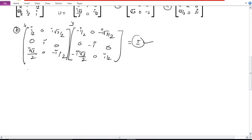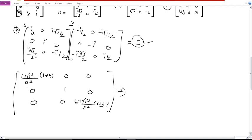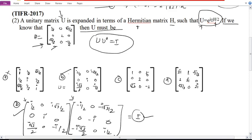The unitary matrix is i by 2, 0, i root 3 by 2; 0, minus i, 0; i root 3 by 2, 0, minus i by 2. Now multiply this with its conjugate. The multiplication equals I, the identity matrix. After calculation, minus 1 times i square by 4 times 1 plus 3 gives 1, 0, 0; 0, 1, 0; 0, 0, 1. This is the identity matrix. So option B is correct because it satisfies the unitary matrix condition.